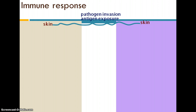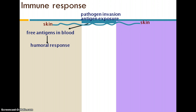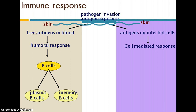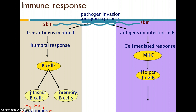Now let's look at everything from the big picture — the active immune response. Say a pathogen gets past your skin barrier and the second line of defense. Your body then determines: are those antigens just floating around in the blood, or are they actually within cells? There are two different responses. For a humoral response, plasma B cells make the antibodies and memory B cells store the instructions. For cell mediated response, MHC proteins take a snapshot of what's inside the cell, the helper T cell recognizes a problem and notifies the cytotoxic T cell to destroy those infected cells.